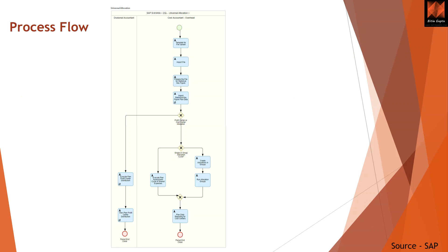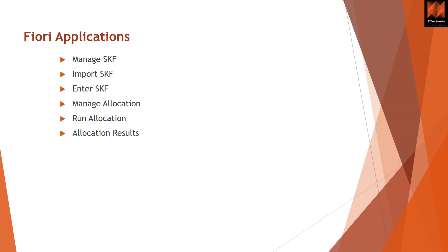This is the end-to-end process flow from standard SAP building blocks. Right from a template upload — we prepare the file for statistical key figures — then we import that file. We create allocation groups or run allocations, and then we can see the data. This activity is generally performed at period end or month end. The entire process is managed by Fiori apps: one app for managing statistical key figures, one for importing, one for managing allocations, one for running allocations, and one for viewing allocation results.